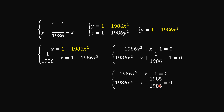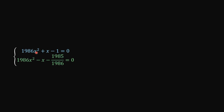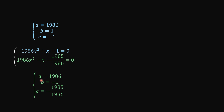The purpose of this channel is to solve problems — we don't want to skip steps. So from here, I put the first and the second equation in different colors. For the first one, A equals 1986, B equals 1, and C equals negative 1. For the second one, A equals 1986, B equals negative 1, and C equals negative 1985 over 1986.